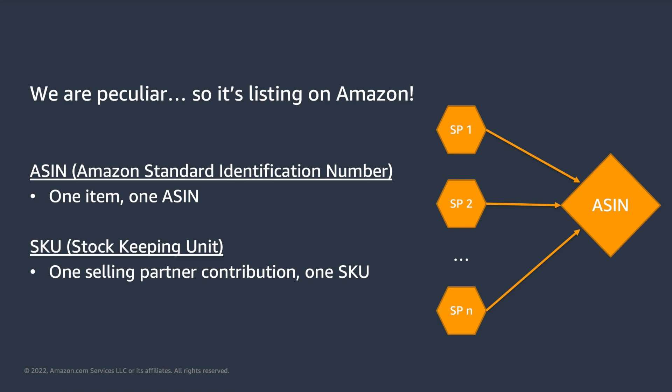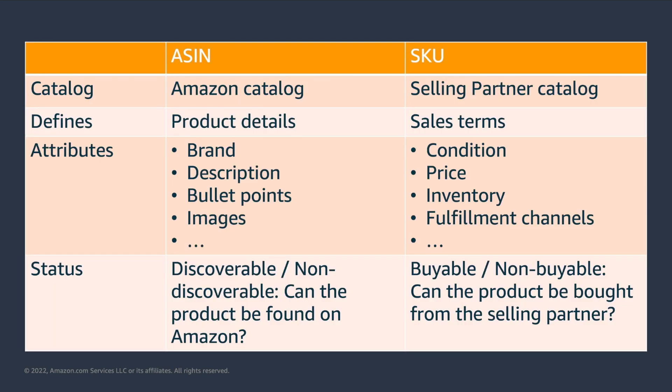In the next slides, we will dive a bit deeper into how this process works. In this table, we can see which data belongs to the ASIN and which one belongs to the SKU, and can therefore be more controlled by the selling partner. Since the ASIN combines information from different contributions, it stands at the Amazon catalog level. Any customer or selling partner that queries the Amazon catalog will get information for the ASIN. The SKU stands at the selling partner catalog level, which means that the data is specific to them.